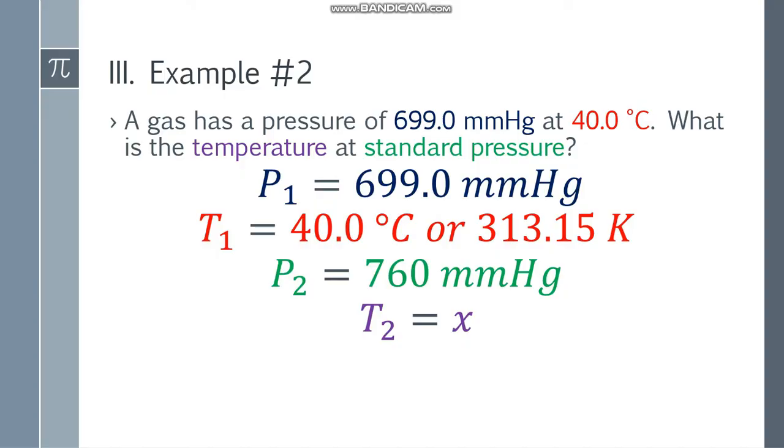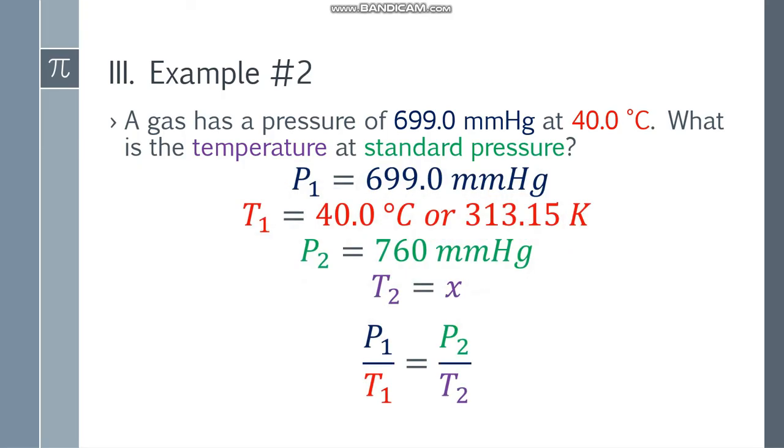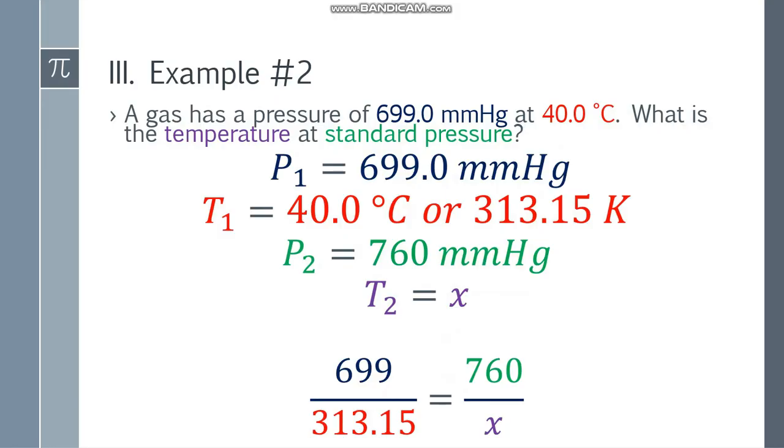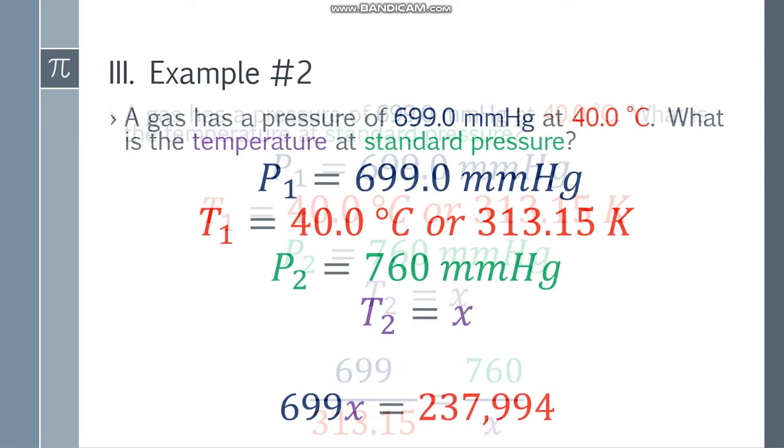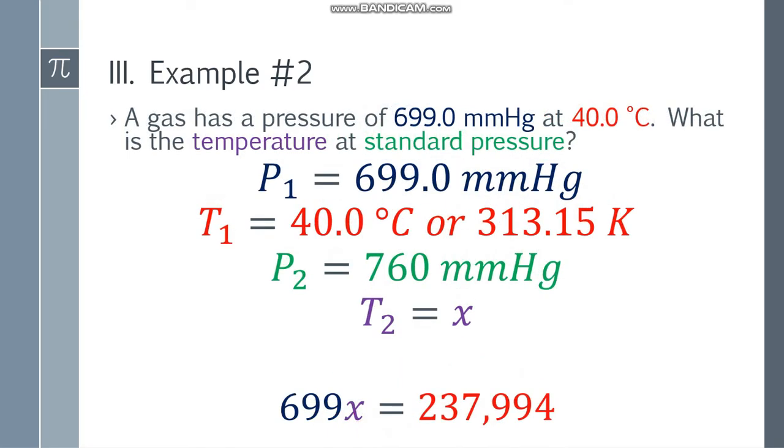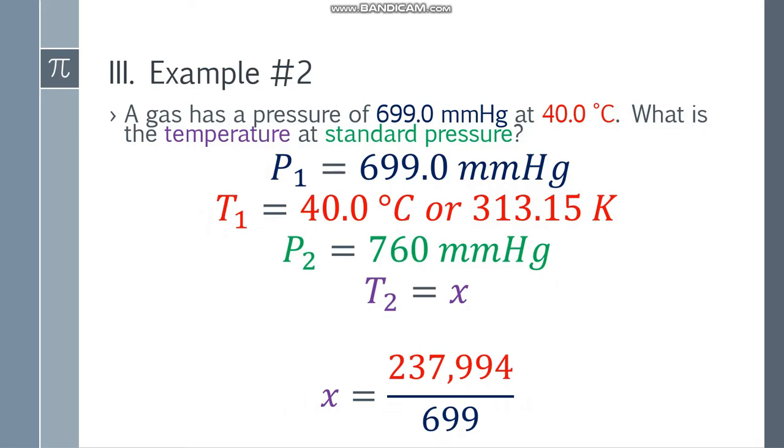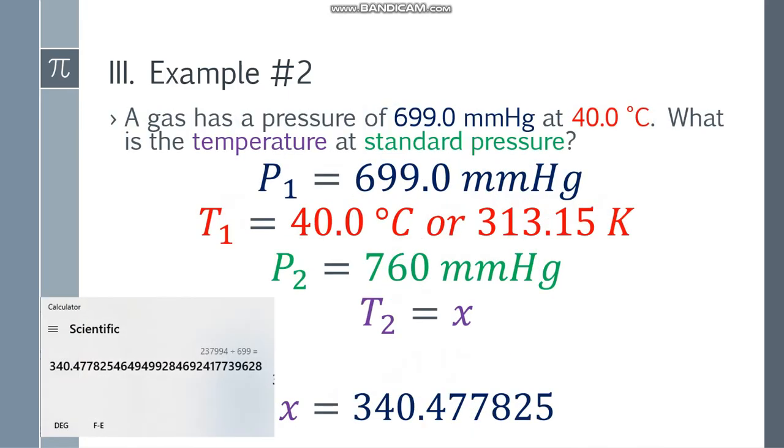Now let's use the formula: P1 over T1 equals P2 over T2. Substitute the values: 699 over 313.15 equals 760 over x. Cross multiply, and you'll get 699x equals 237,994. Divide both sides by 699, and x equals 340.477825 and so on.